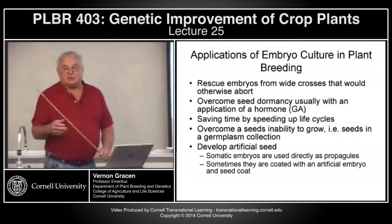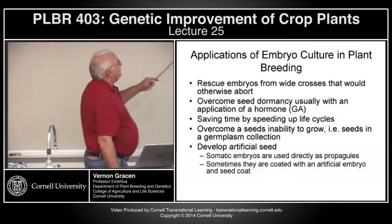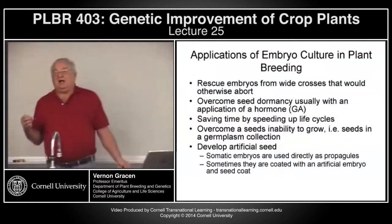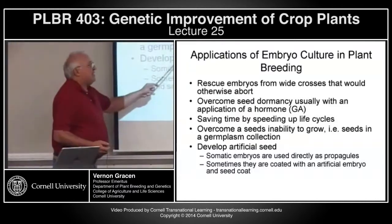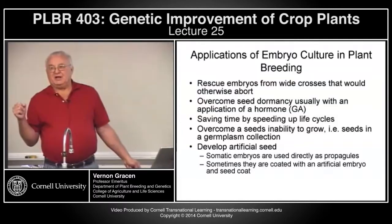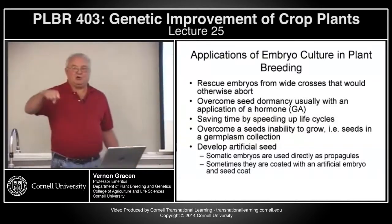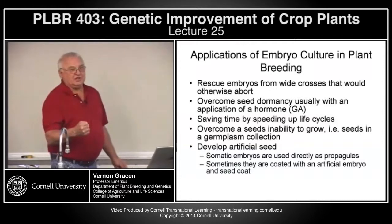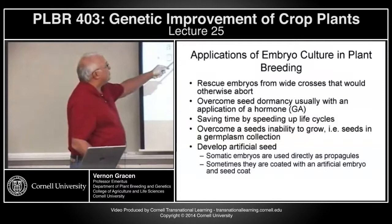Embryo culture applications are probably the most extensively used in plant breeding — we rescue embryos from wide crosses. A lot of the relatives of our crop plants are not sexually compatible. But in many cases you can make a cross and get an embryo; it's just that the embryo aborts and will not grow and develop in the plant tissue. By cutting out that embryo, excising it, and putting it on proper media, you can develop plants from those wide crosses.